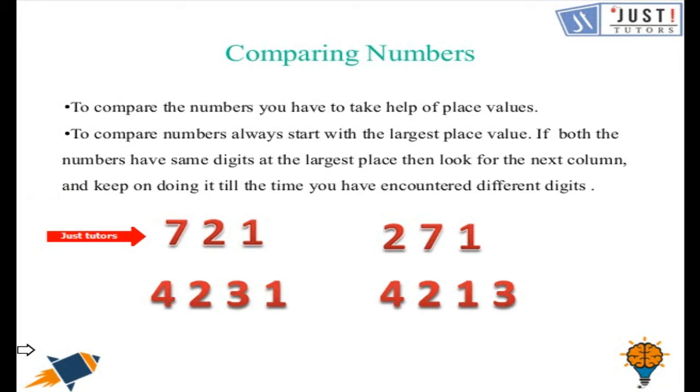So to compare these two numbers, we need to start with the largest place value. And the largest place value here is hundreds. Compare the hundreds column of both the numbers. So which one is greater, 7 or 2? Definitely 7 is greater. So out of these two numbers, 721 is the bigger number.